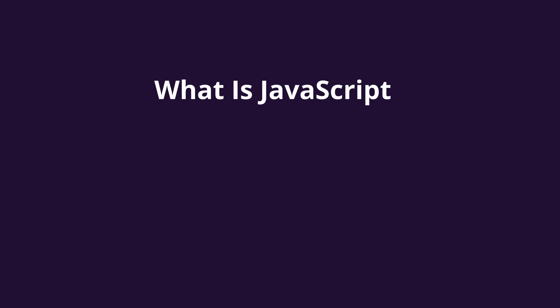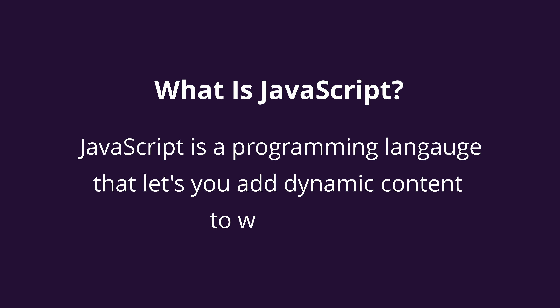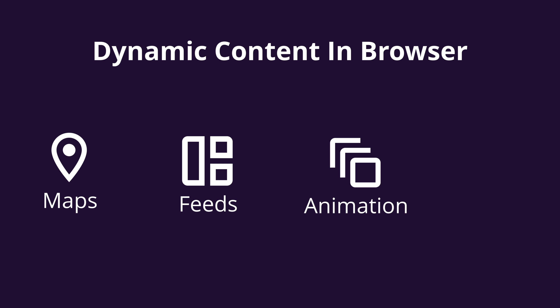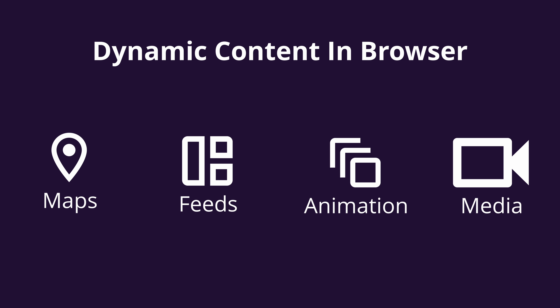To give you a very high level definition, JavaScript is a programming language that lets you add dynamic content to web pages. Though modern JavaScript is not restricted only to web pages, to start with things in the beginning, we would stick to the context of the web browser. So anytime you see a web browser displaying anything more than static information such as maps, content feeds, animated graphics, media players etc., you can assume JavaScript is involved in some way or the other.